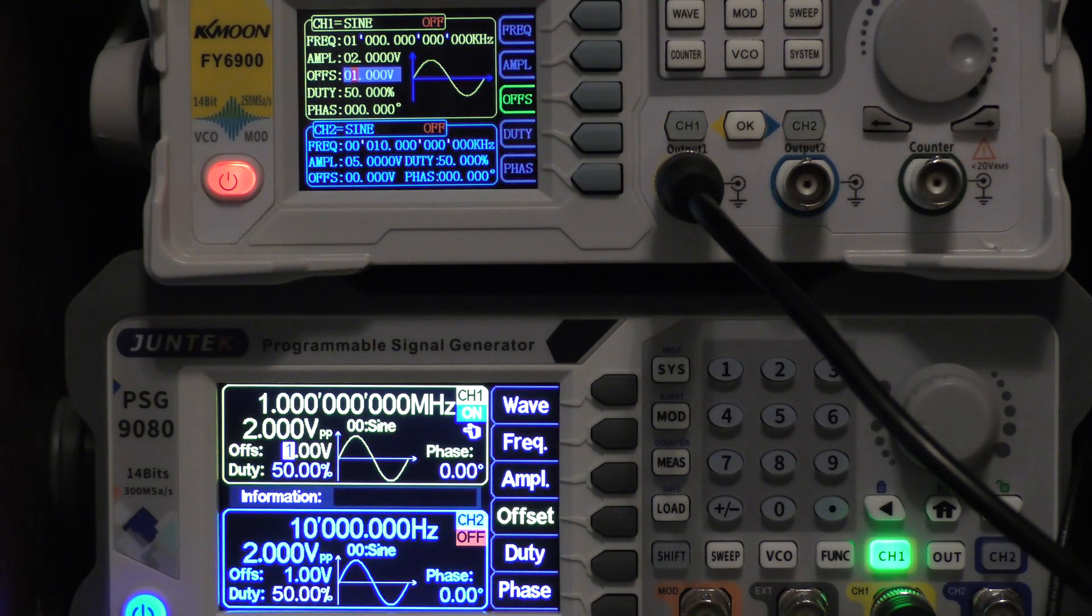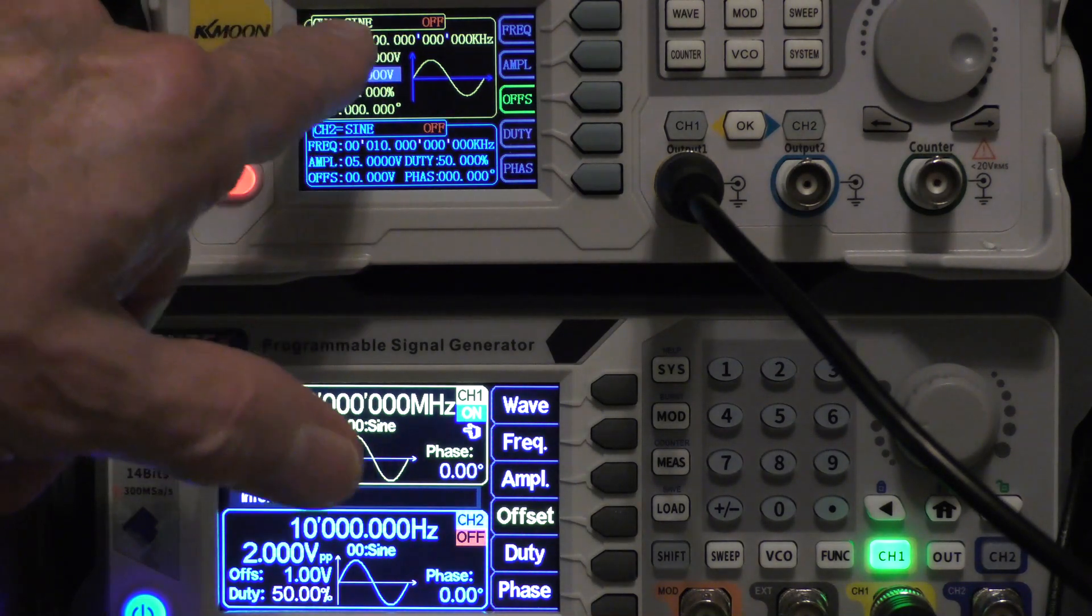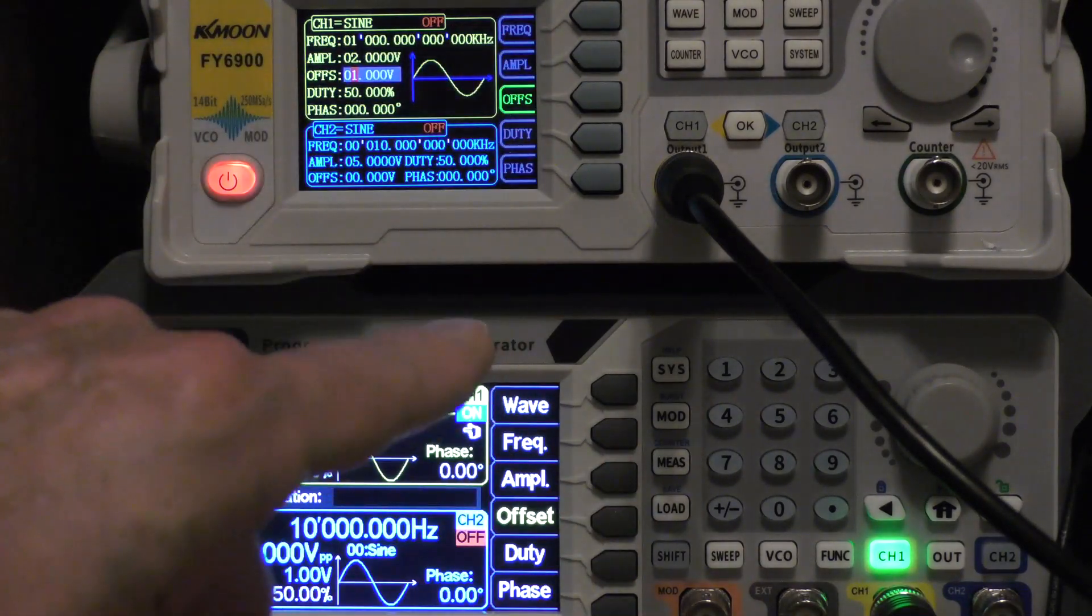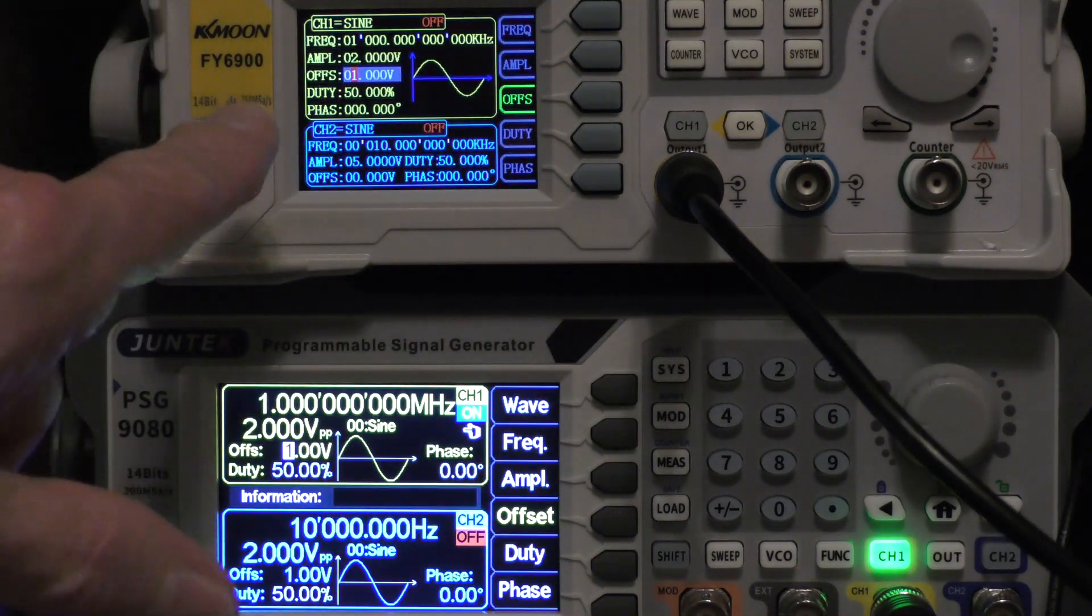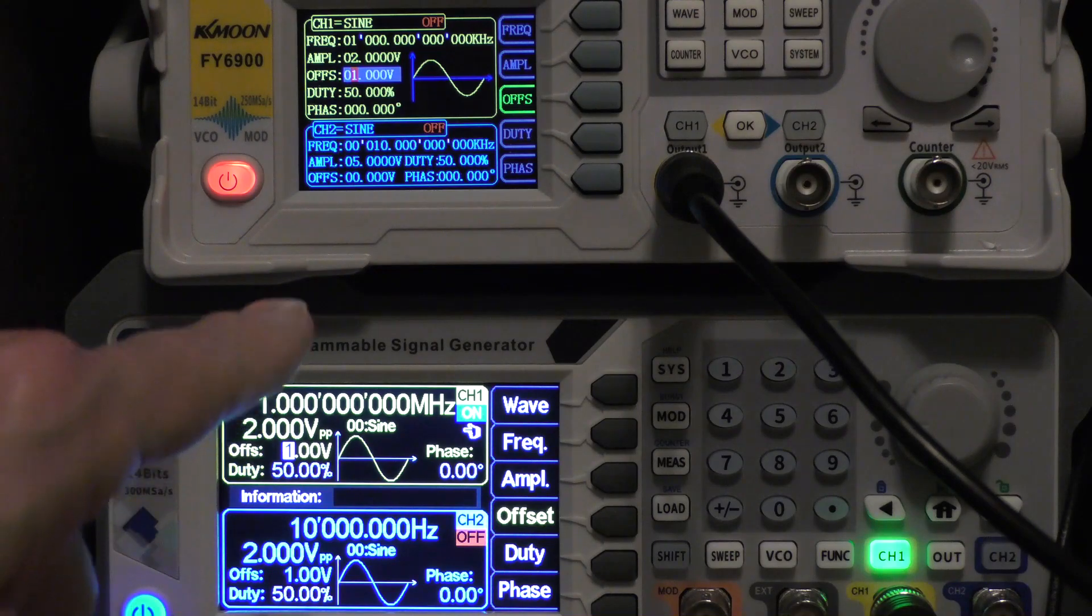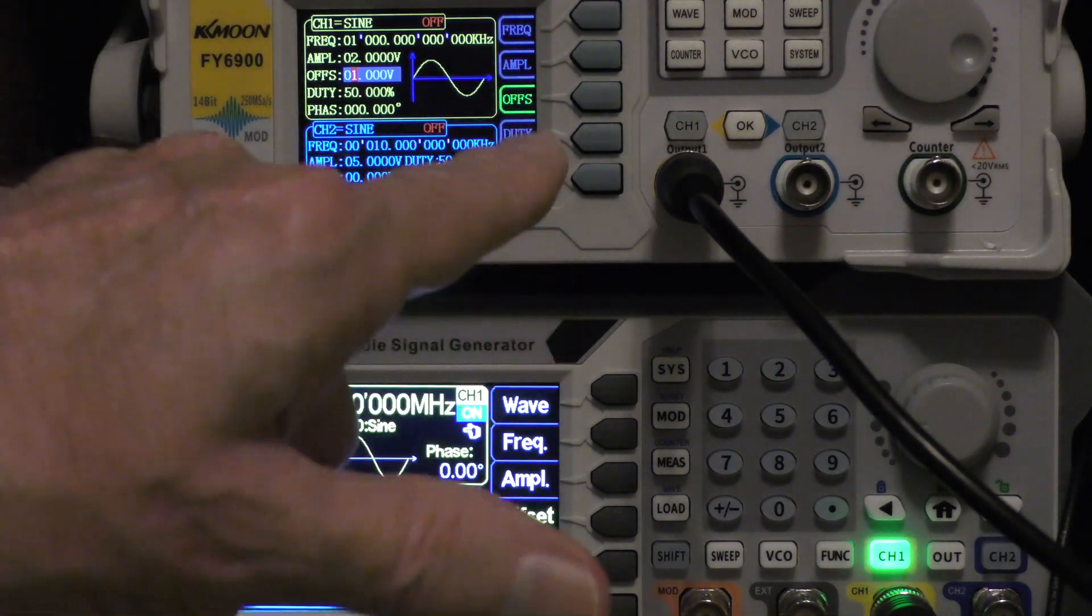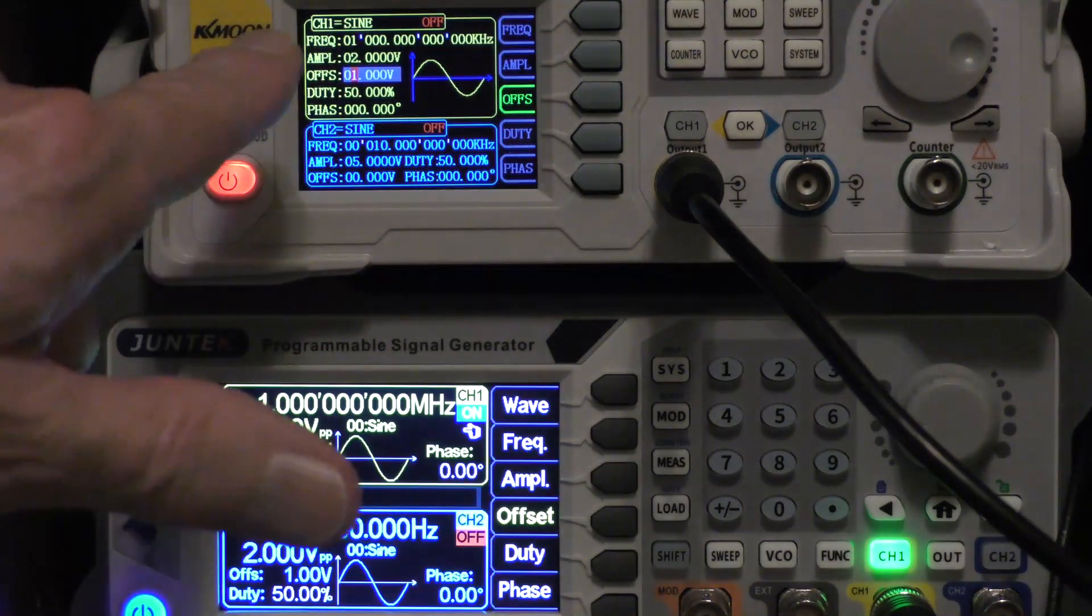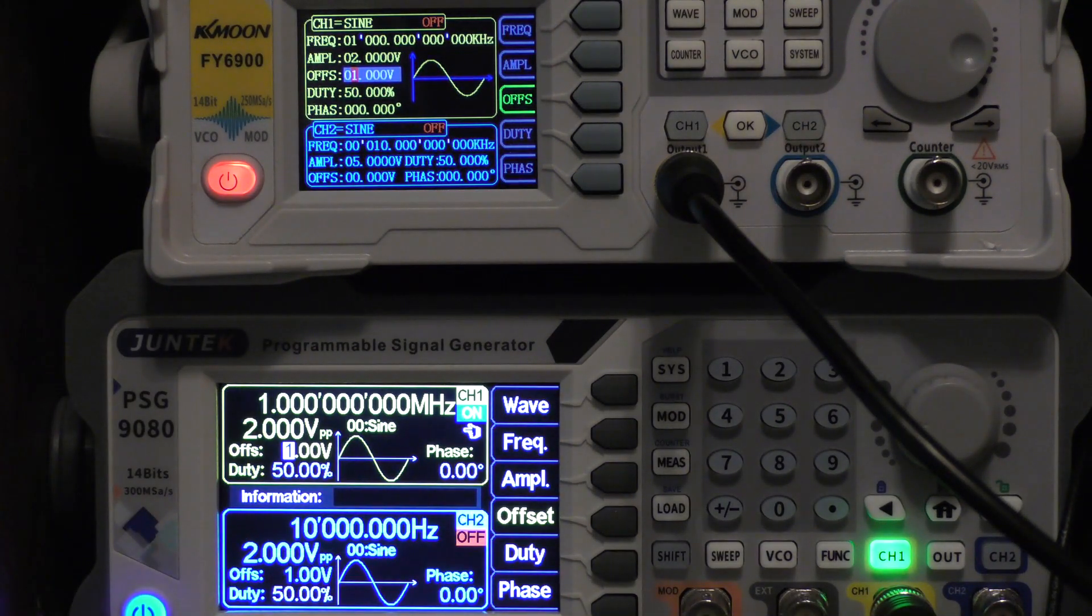Now I haven't checked all the arbitraries, but if you set an offset in a sine wave for example, and then you go to a square wave or even a DC value, that same offset will be there. Then if you set that offset back down to zero in that other function and come back to sine wave, you'll be at zero offset.